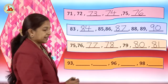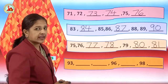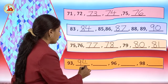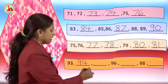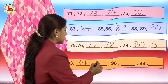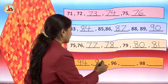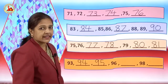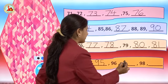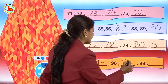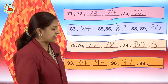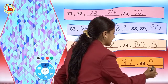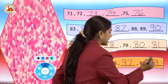On the next line, 93. After 93, 94. After 94, the missing number is 95. Very good children — you all know the numbers now. Next, 96. After 96, 97. 98 is written. And after 98, 99.